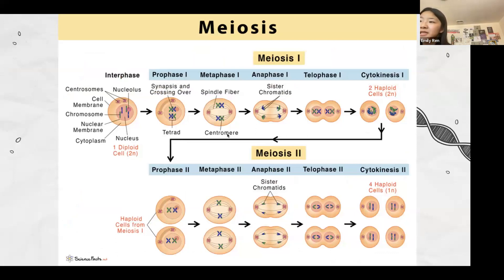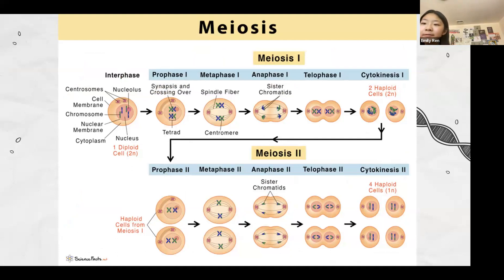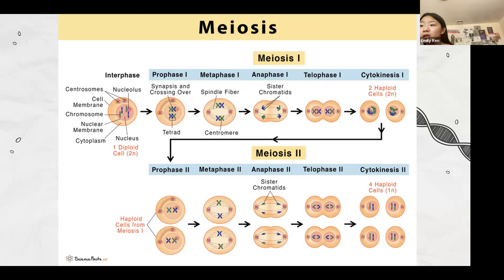Meiosis is like mitosis but doubled. You go through prophase I, metaphase I, anaphase I, telophase I, and cytokinesis, and then each of the resulting cells goes through prophase II, metaphase II, anaphase II, telophase II, and cytokinesis II. What you need to know is that one diploid cell becomes four haploid cells.